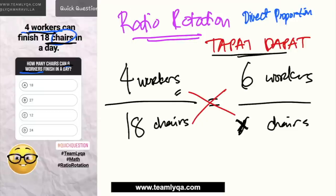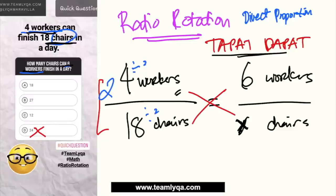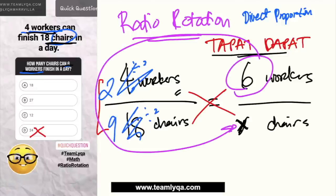This part right here, ito yung naneglect ng maraming tao — and I think ito ang dahilan kung bakit marami sa inyo nagkamali ng sagot. Most of you answered 24, which is actually the wrong answer. My advice is: pag nakakita kayo ng fraction na ganito at mahirap siya i-divide, para hindi kayo mag-deal with decimals, i-simplify nyo sa smallest terms. If you notice, ang 4 pwede mo siya i-divide sa 2, ang 18 pwede mo rin i-divide sa 2. So 4 divided by 2 is 2, pwede mong gawing 9. So ang smallest terms ng 4 over 18 is 2 over 9. So iikot natin: 6 divided by 2 is 3, times 9 — the answer is 27 chairs. And now you're done.